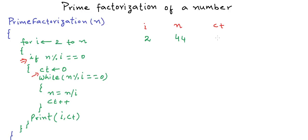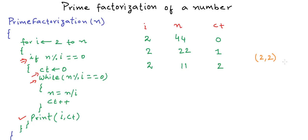Inside the while loop, we keep dividing n by 2 as long as possible. So i is 2, n becomes 22, count becomes 1. We can still divide 22, so n becomes 11 and count becomes 2. We cannot divide n by 2 anymore, so we exit and reach the print statement. We print the pair 2 and 2 — meaning 2 is the factor and 2 is its frequency — representing 2 to the power 2.